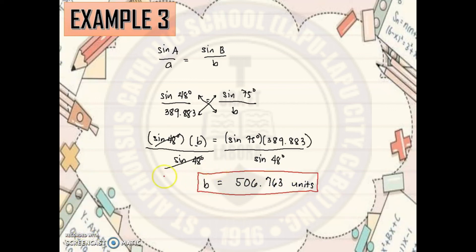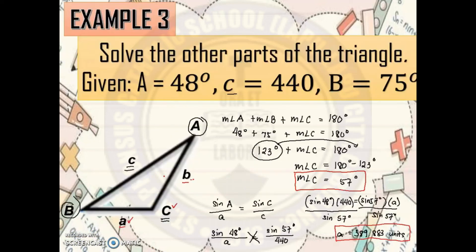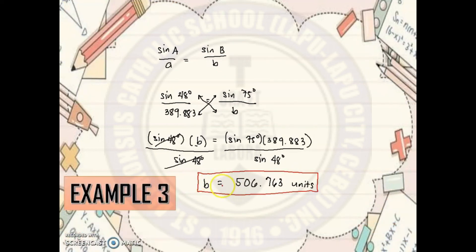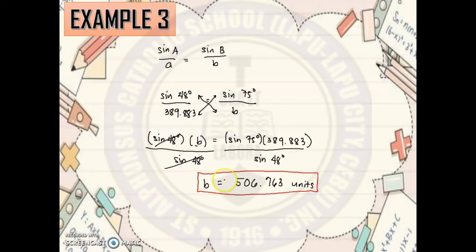That's it for today's lesson. Let's recall: we already solved all parts of the triangle — angle C = 57°, side a = 389.883 units, and side b = 506.763 units. That will be the end of this video. Hope you have learned something today, and you are now ready to answer the formative assessment. Thank you, everyone, and see you in the next video.